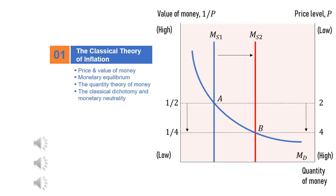The quantity theory also implies the classical dichotomy and money neutrality concepts. Since quantity of money only affects price or the value of money, it is said to be neutral to output — that's why it's called the money neutrality concept. Combined with classical dichotomy — the concept that separates nominal and real variables — it is said that money can only affect nominal variables, which is the monetary value of output, but not real variables or output measured in physical units.